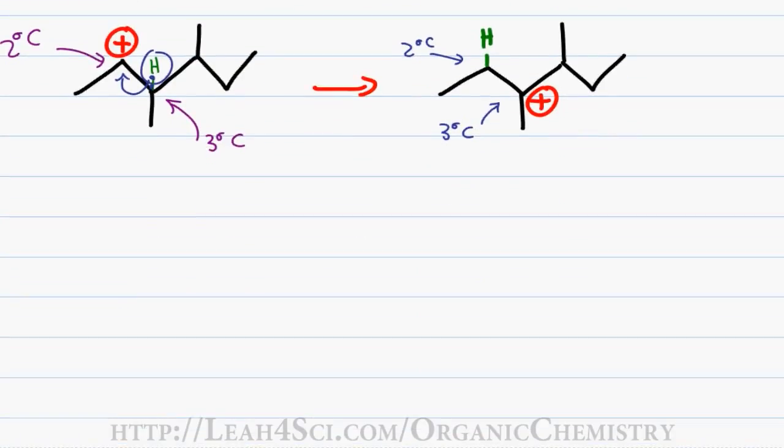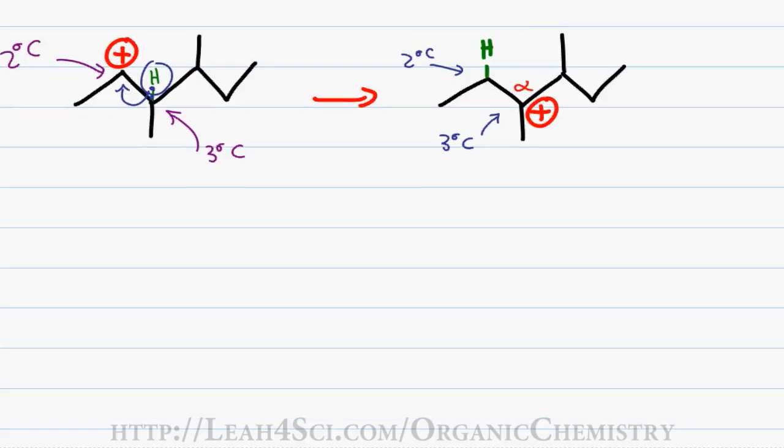Now that the carbocation shifted, we have a new alpha carbon which means we have to analyze new beta carbons to determine what will be our ultimate elimination product. To make matters worse, it appears that we now have three unique beta carbons and therefore offer three new potential products. Let's redraw this and take a look.